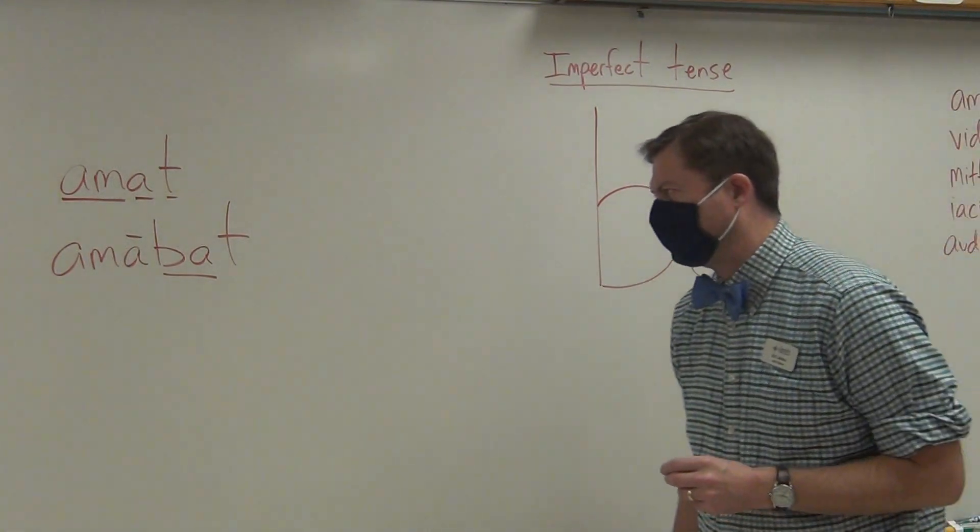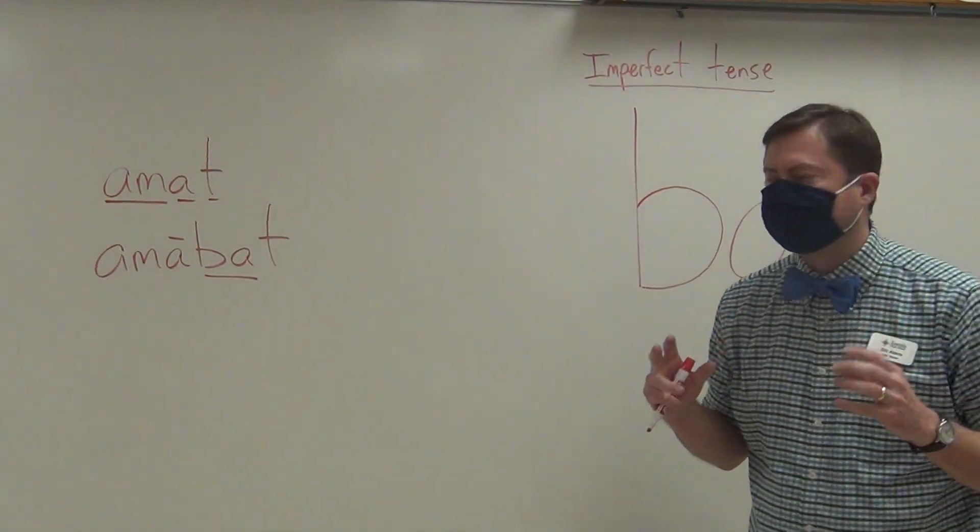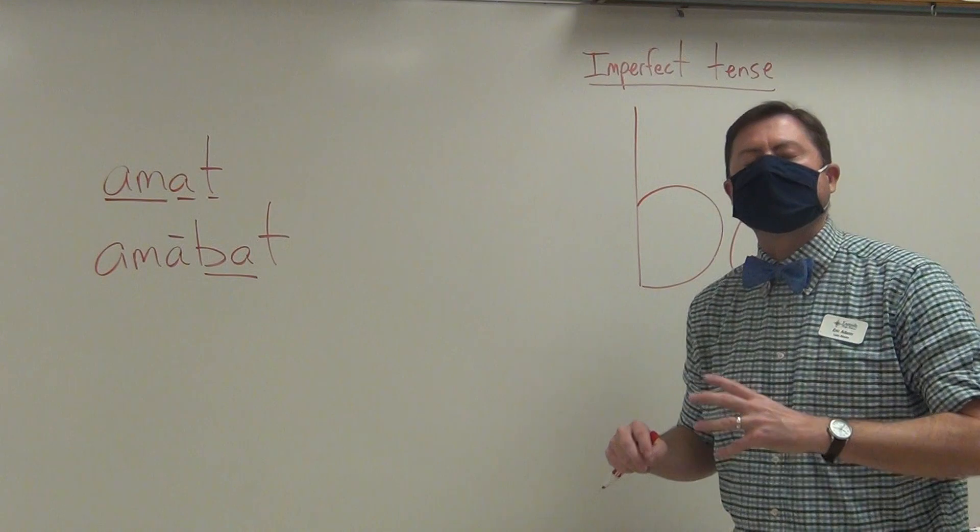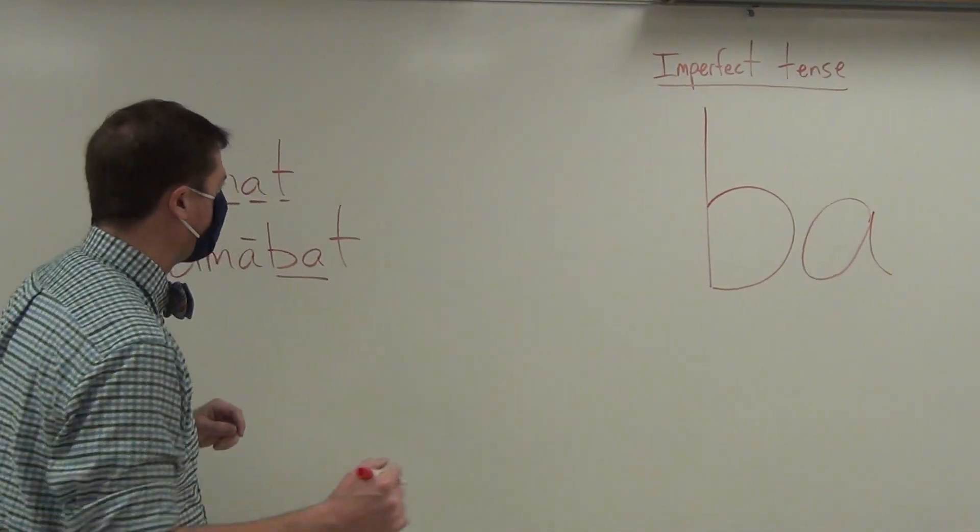But imperfect indicates an action that is not. And so therefore there are several ways that you can express in English the imperfect tense of Latin to emphasize the fact that it is action of the past but not completed. Now I'm going to give you an example of how we can understand this.